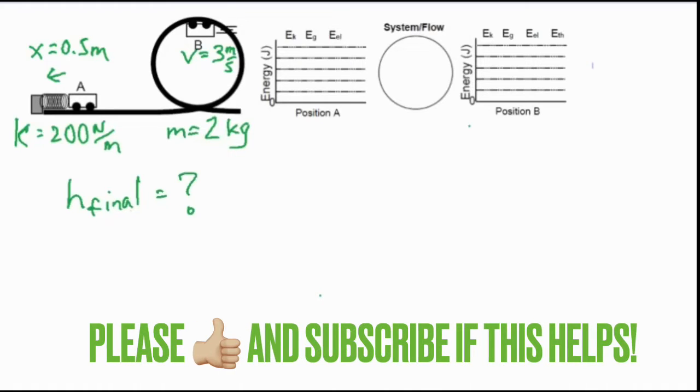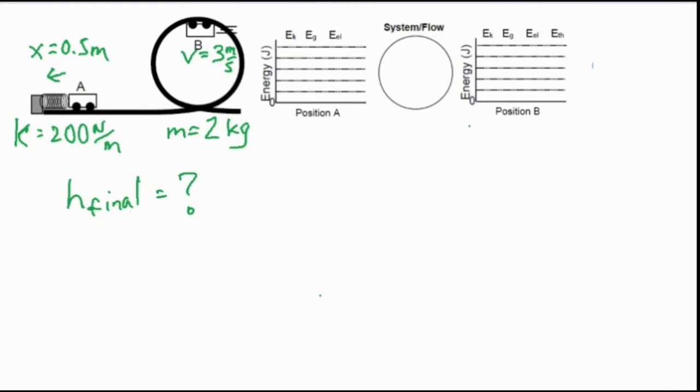So the first thing you're going to do is address the concepts with energy bar graphs, which will lead us into our formulas and finally solving for a final height. So our scenario is going to be a cart that's compressed against a spring that gets pushed off, goes around a loop, and our final position is at the top of this loop right over here.